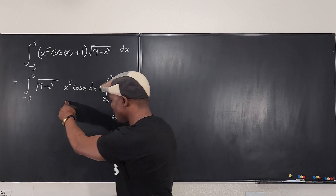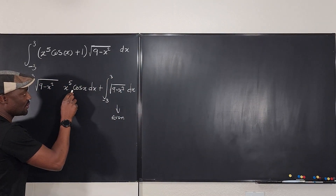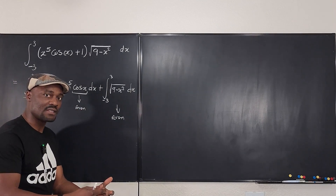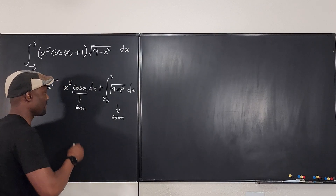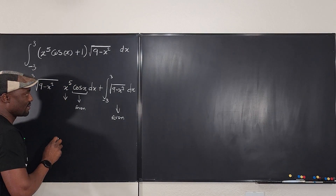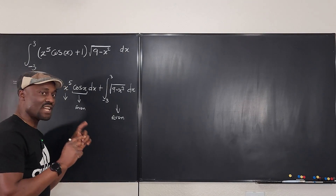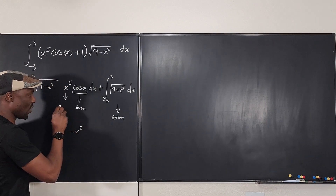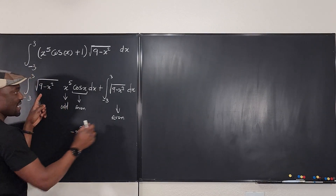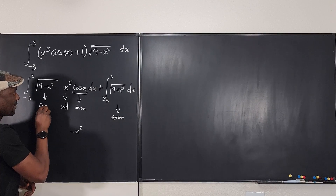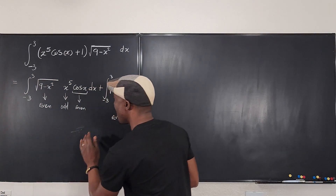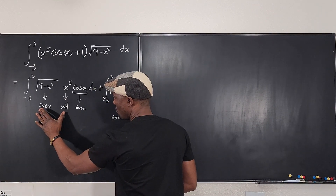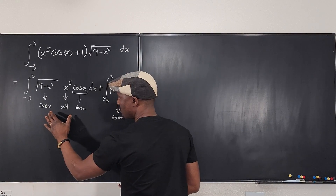Now looking at the first integral, cosine x is an even function because cosine of negative x is the same thing as cosine x, so that part is even. The x to the fifth here is an odd function, because if I change x to minus x and raise it to the fifth power, I'm going to end up with negative x to the fifth. So x⁵ is an odd function, and we already established that √(9 − x²) is even. So what do we have here — is the full integrand even or odd?